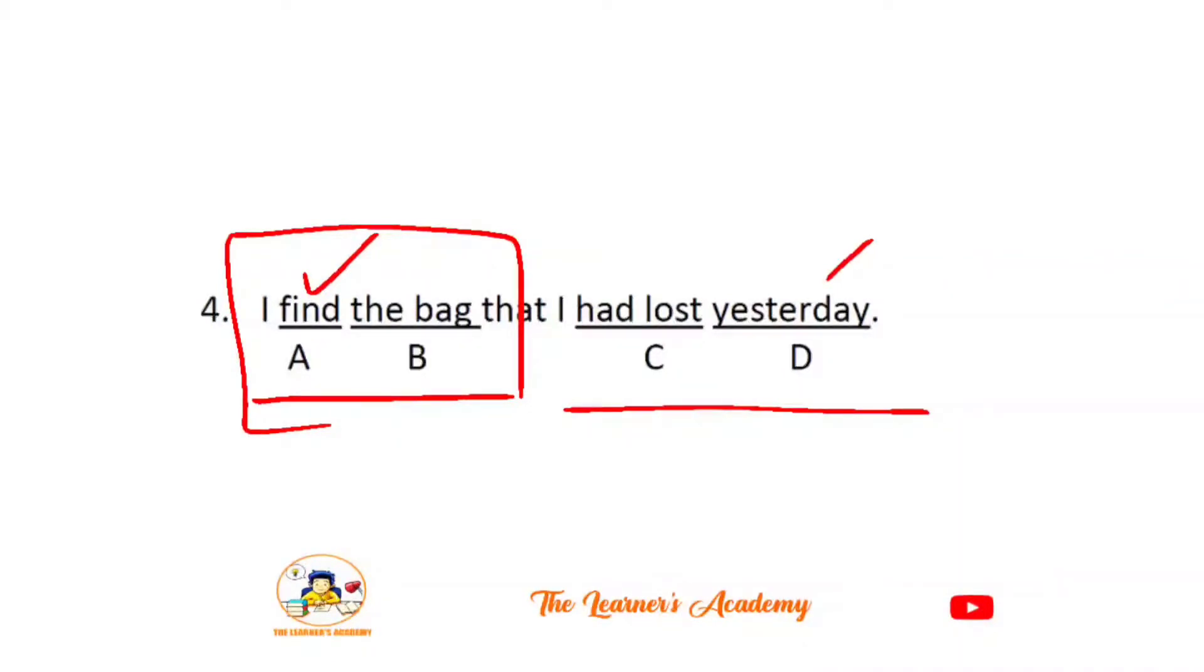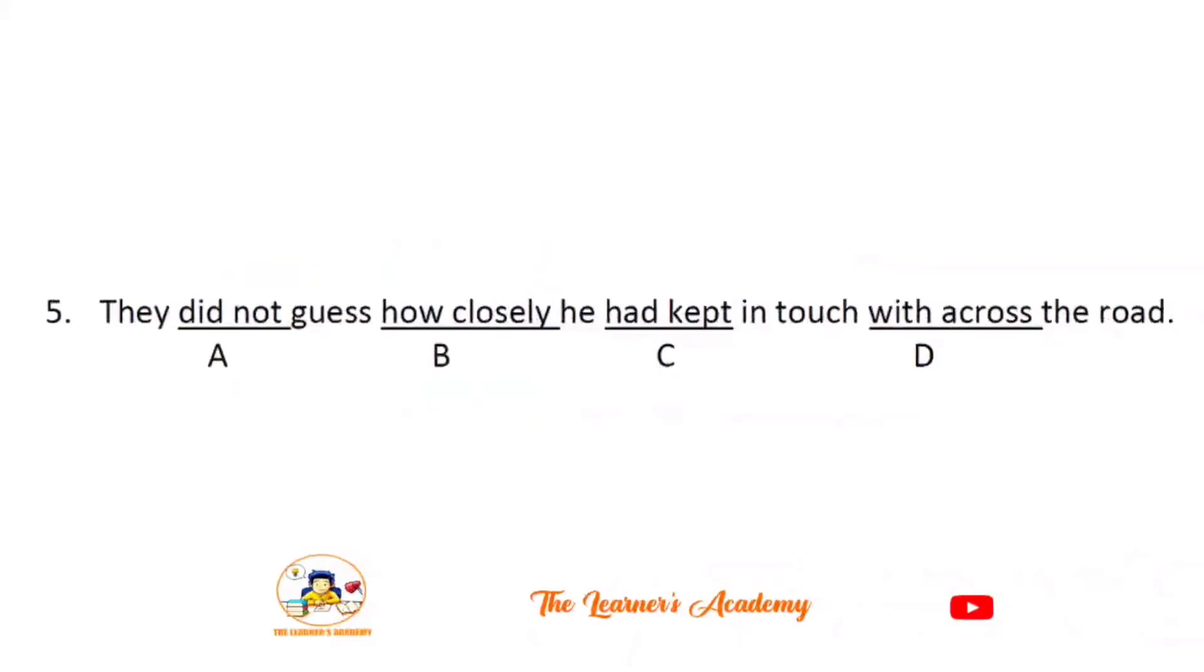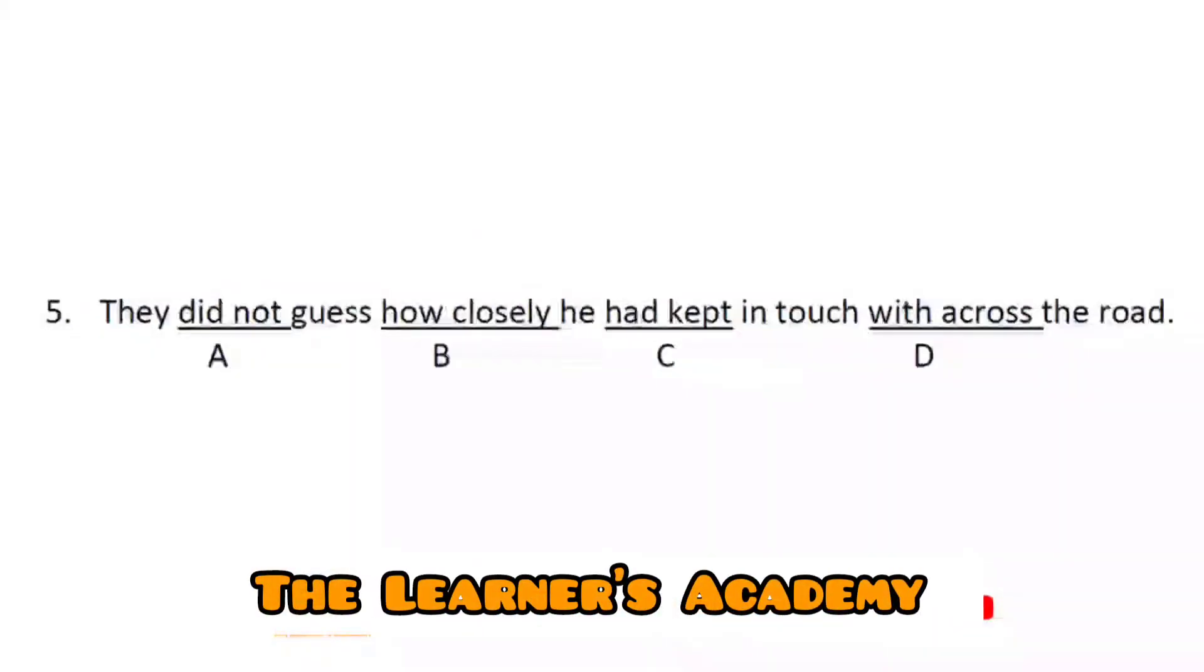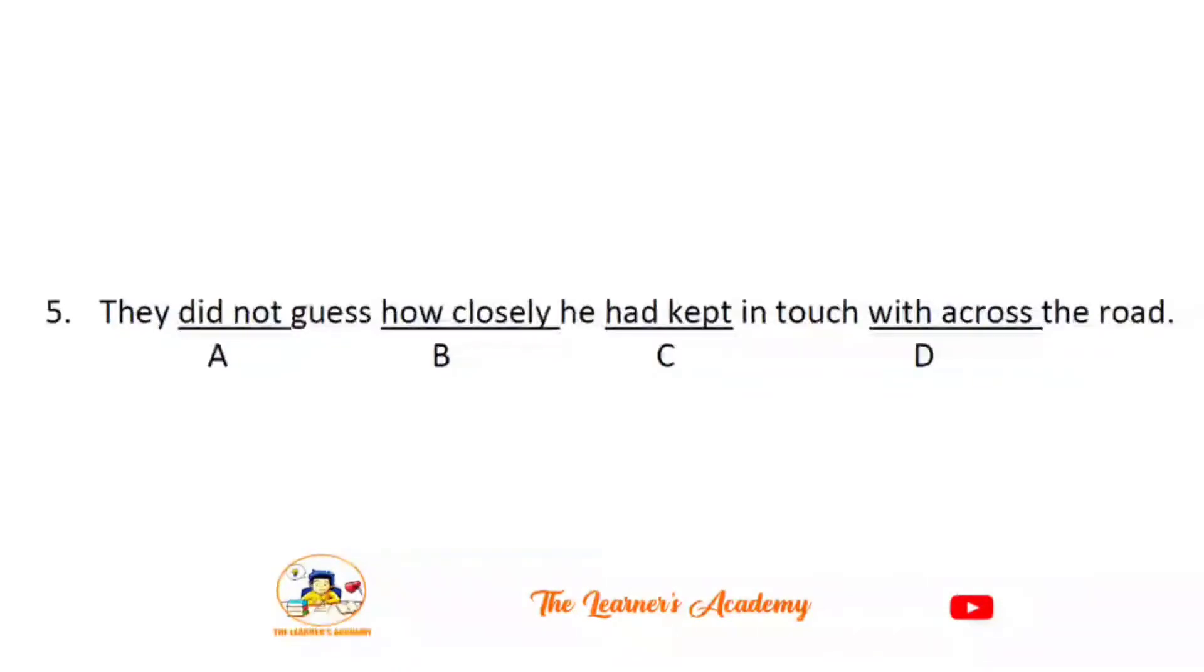They did not guess how closely he had kept in touch with across the road. The error is in the preposition usage. 'Across' is already a preposition, so we don't need 'with' before it. He had kept in touch across the road. Option D has the error.